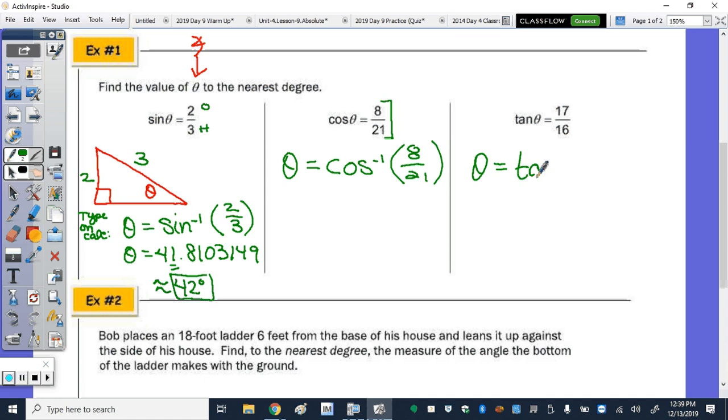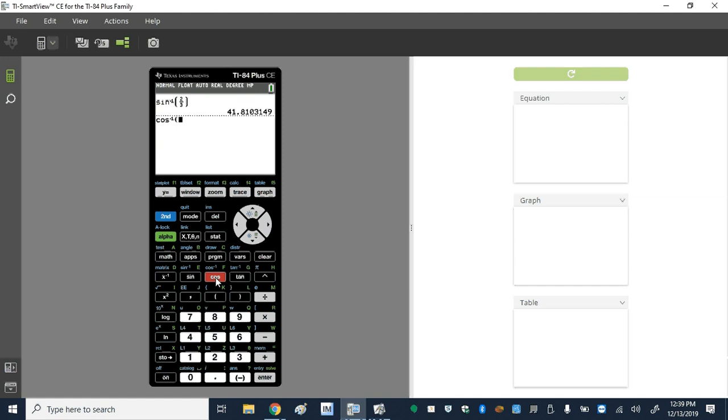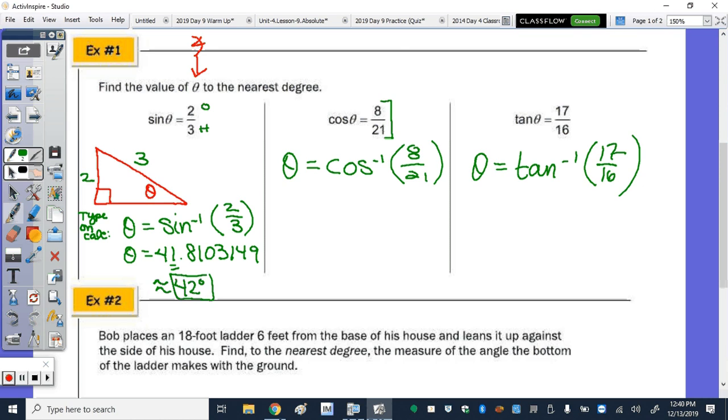This one would be theta equals inverse tangent of 17/16. So type those both in the calculator, and we'll get the angle measures. So inverse cosine, so second cosine of 8 over 21. And then inverse tangent of 17/16. So the first angle rounded to the nearest degree would be 68 degrees, and then the second one 47 degrees. So theta is approximately 68 degrees, and then theta is approximately 47 degrees.